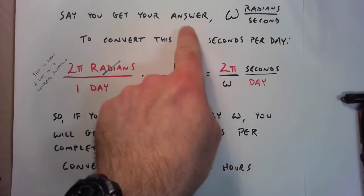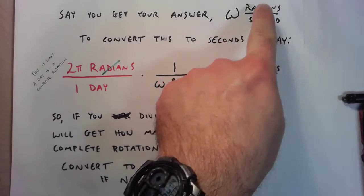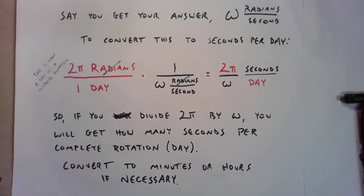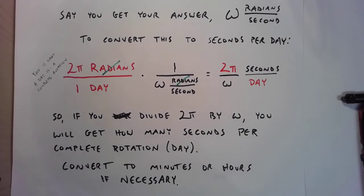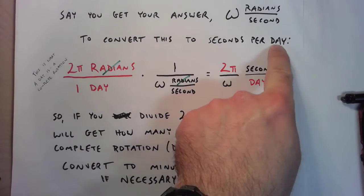So let's say you get your answer, omega, that's in units of radians per second, probably a very small number. In order to convert that to seconds per day,